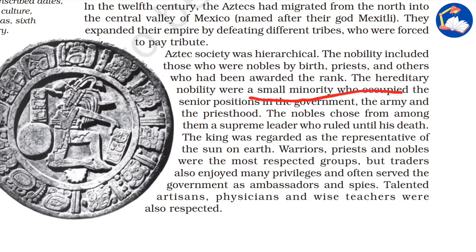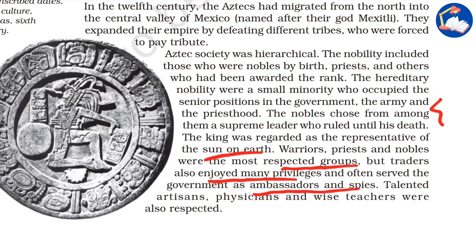Among the Aztecs, the hereditary nobility was a small minority that occupied senior positions in government. The nobles chose a supreme leader from among themselves who ruled until his death. The king was regarded as a representative of the Sun on earth. Warriors, priests, and nobles were the most respected groups, but traders also enjoyed many privileges, often serving the government as ambassadors and spies. Talented artisans, physicians, and wise teachers were also respected.